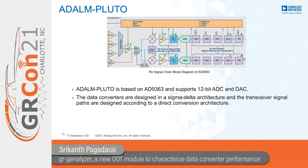The data from the ADCs is processed by the programmable filters before it is available at the digital interface. Because this is an integrated transceiver, it is not possible to characterize the ADCs alone — we need to characterize the transceiver as a whole. The results must be interpreted as the performance of the integrated module rather than the ADCs themselves, since the signal experiences bit growth, filtering, and harmonic filtering based on the overall pass band and stop band configuration.